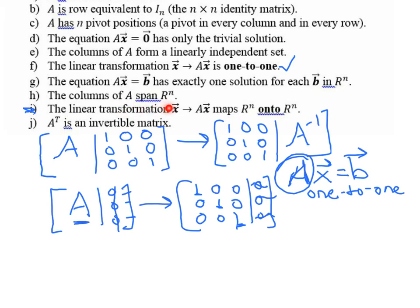Okay, the columns of A span R^n. So we've seen that the columns of A span R^n if we end up with a pivot in every column like we do here. So H is another one that is directly connected. F, G, and H are very closely tied, because A spans R^n, or the columns of A span R^n.